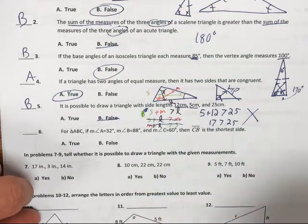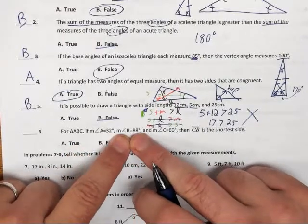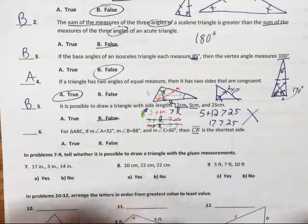All right, moving on to number six. It says that for triangle ABC, we've got 32, 88, and 60 degrees, and it's asking, is CB the shortest side?